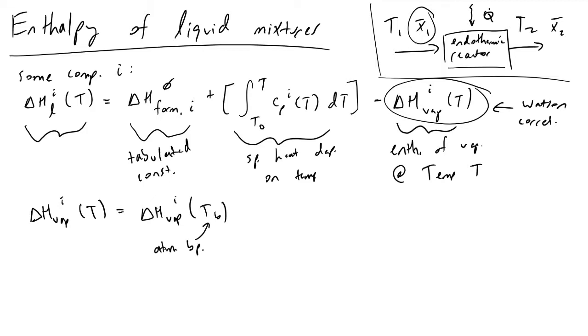We first find what the enthalpy of vaporization of component i is at the atmospheric boiling point Tb. This is also a tabulated constant value because if we hold pressure constant we know enthalpy is a function of temperature and pressure, therefore this atmospheric boiling point or the enthalpy of vaporization at the atmospheric pressure will be a constant value for this species i, and this is again stuff we just look up in a book.